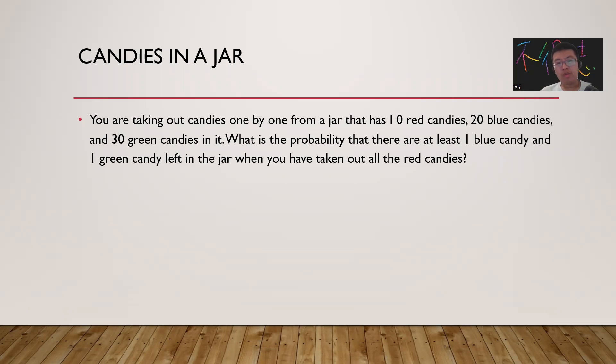We are taking all the candies one by one from a jar that has 10 red candies, 20 blue candies, and 30 green candies. What's the probability that there are at least one blue candy and one green candy left in the jar when you have taken all the red candies?